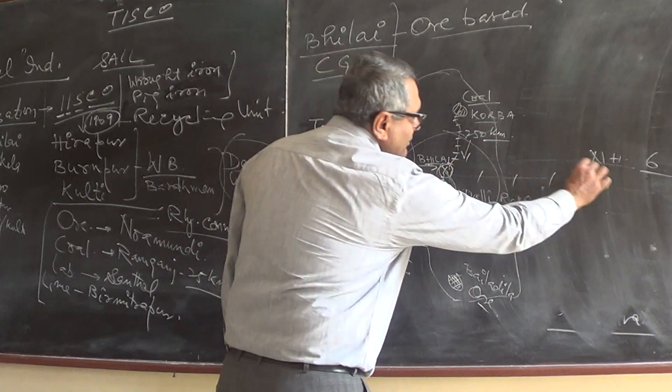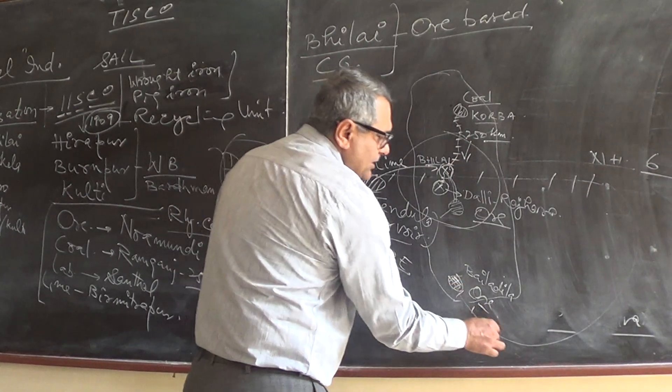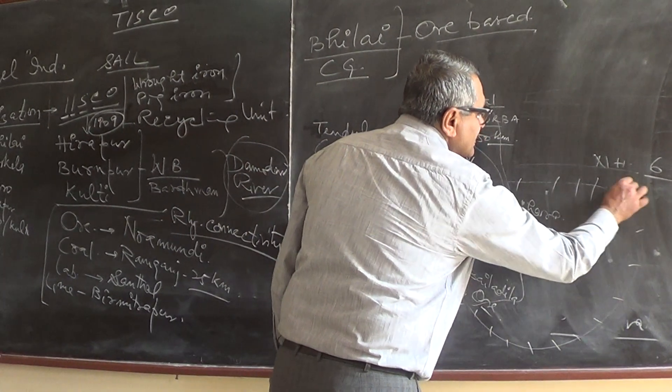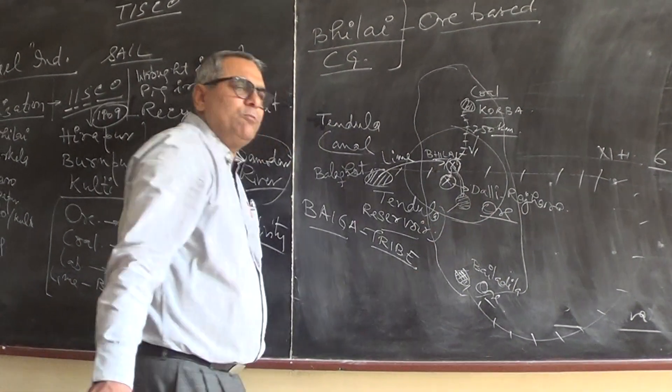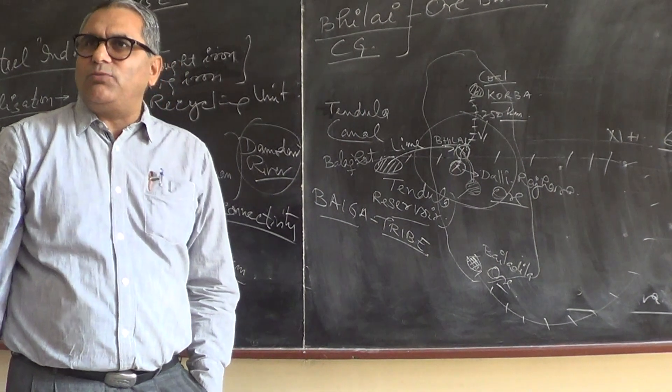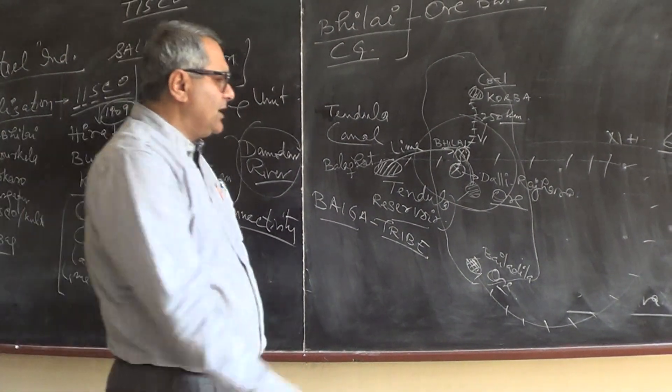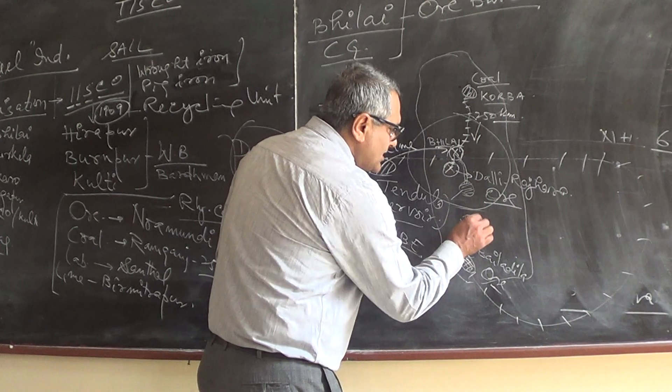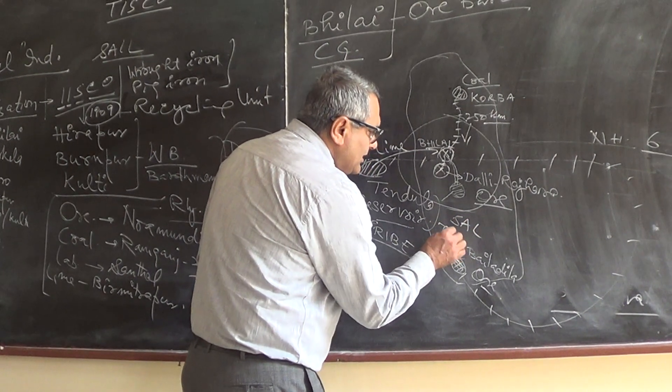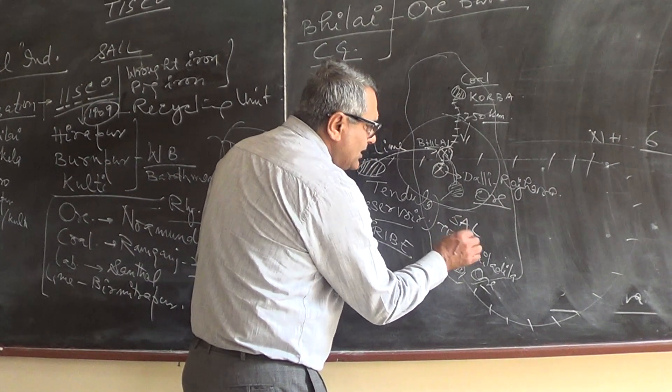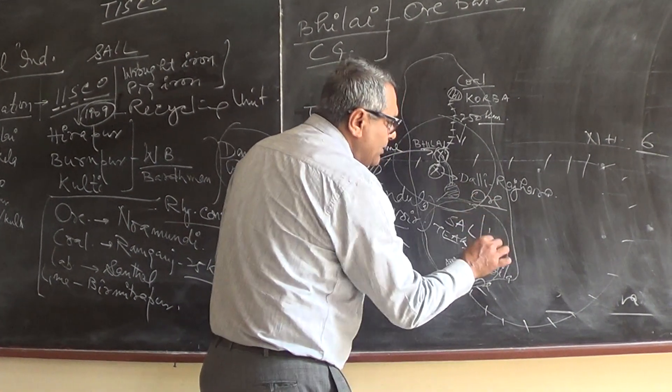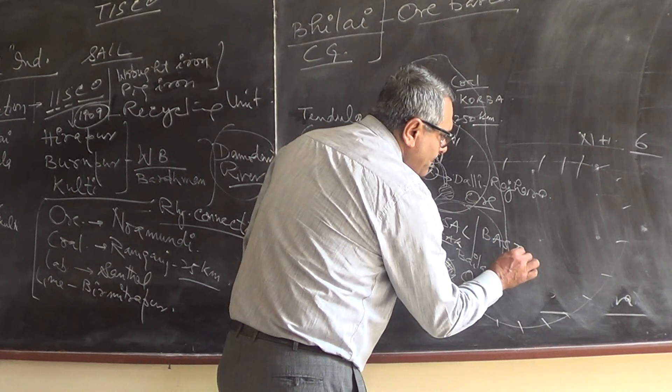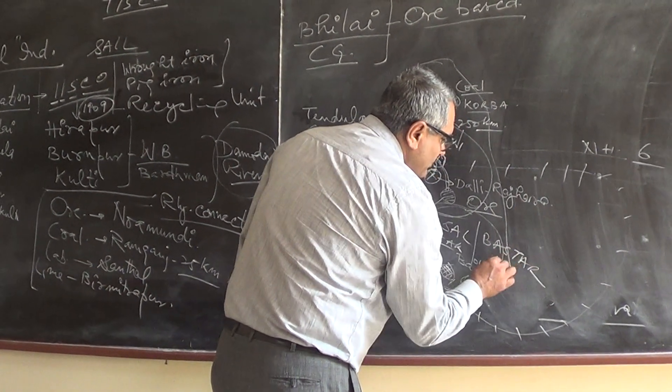So we come all the way from here through Vishakhapatnam. We don't have, because this is the Bastar region, tribal region, forested region, forest of sal and teak. This is basically sal and partly teak. And this is the southern plateau called Bastar plateau.